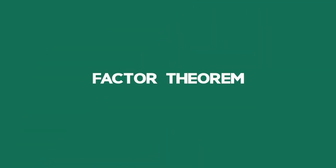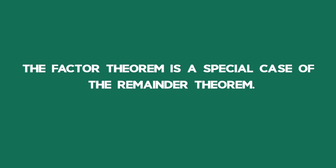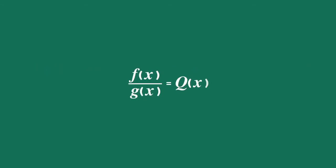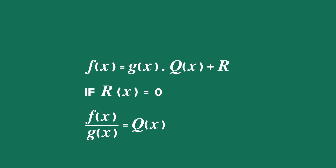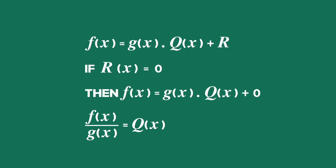Factor Theorem. The factor theorem is a special case of the remainder theorem. If a polynomial f of x is divided by a polynomial g of x and the answer is q of x with the remainder r of x equal to 0, then we know that g of x is a factor of f of x. In other words, if the division results in a remainder equal to 0, then the divisor is a factor of f of x.